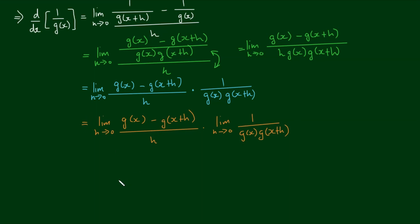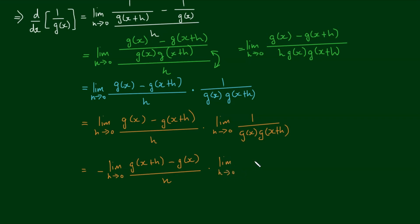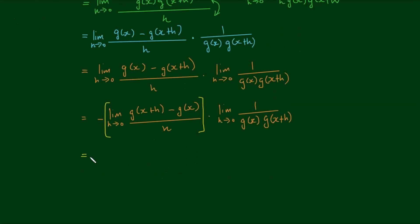According to the limit laws, we can apply the limit to the two fractions separately as a multiplication of two limits. For the first limit, I take out a negative and switch the terms, giving negative of the limit as h approaches 0 of g of x plus h minus g of x over h. This first limit is simply the definition of the derivative for the function g, so it equals negative g prime of x.